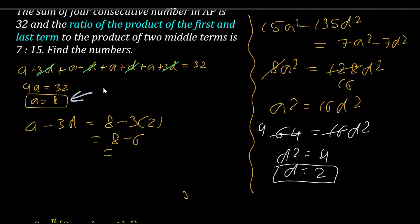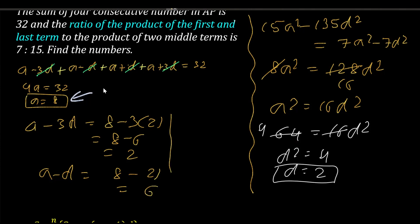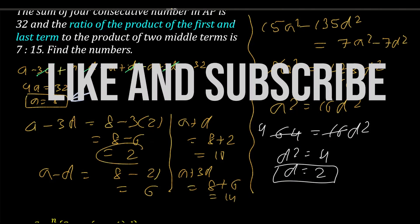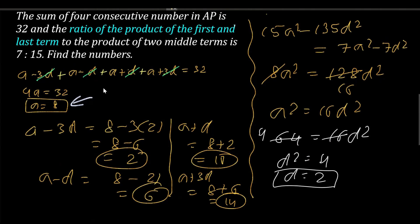The four numbers are: a-3d = 8-6 = 2; a-d = 8-2 = 6; a+d = 8+2 = 10; and a+3d = 8+6 = 14. So the required four numbers are 2, 6, 10, and 14.